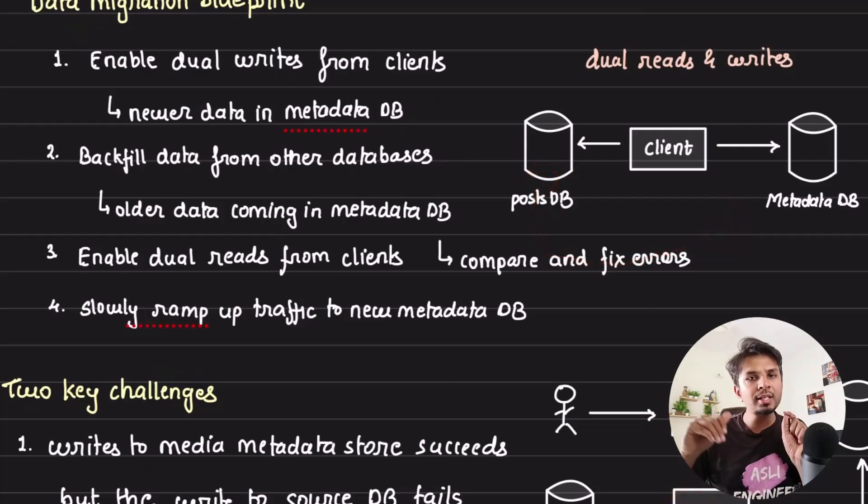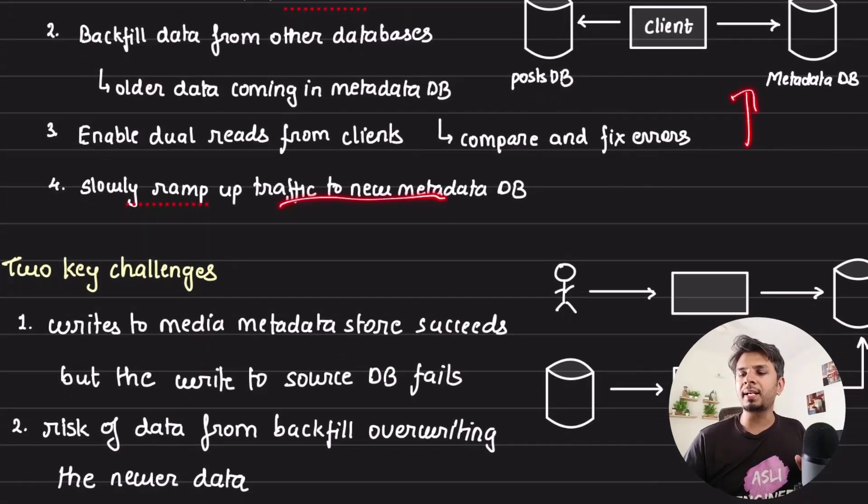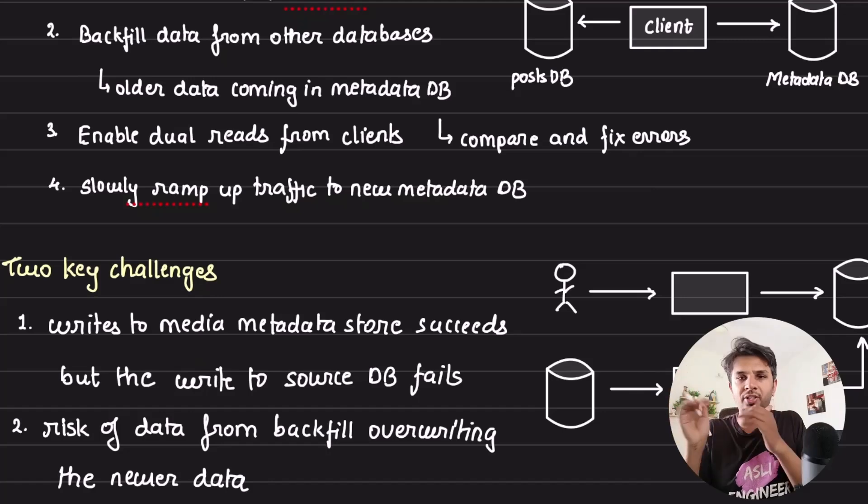Third, they configure the dual reads on both databases—the unified and the source database. This way they would figure out any discrepancies or any errors or any mismatches in the data being served. Once they're confident there are no errors, they would slowly ramp up the traffic on the new metadata DB, completing the entire migration of the data.